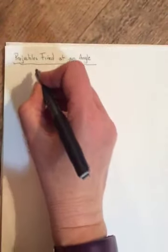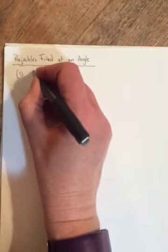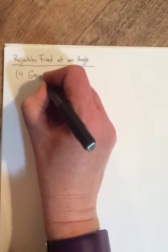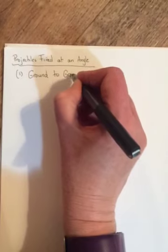Okay, so now that you're getting pretty good at horizontal projectiles, it's time to look at the second type, which are called angled projectiles, or projectiles fired at an angle. And there are two subcategories here. The first one, which is the one we're going to do today, is called ground-to-ground projectiles.